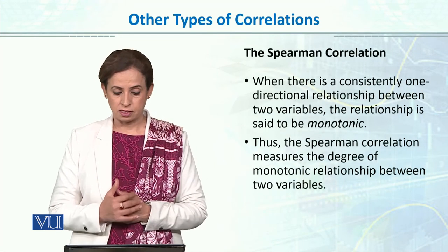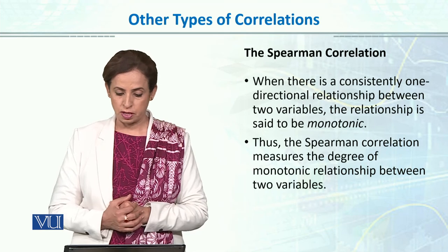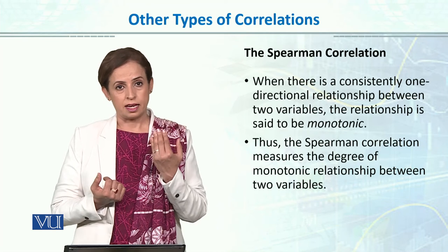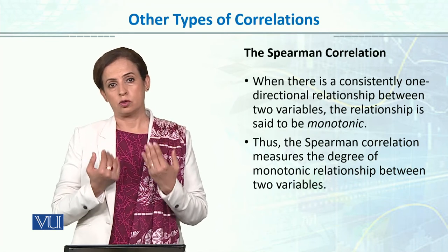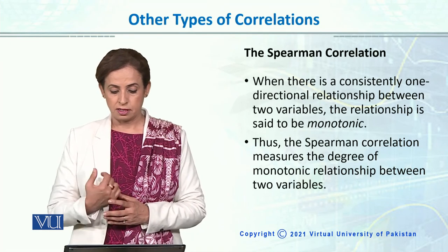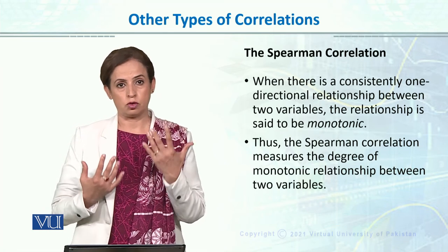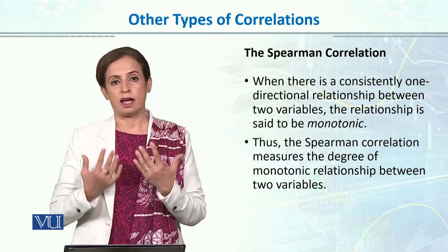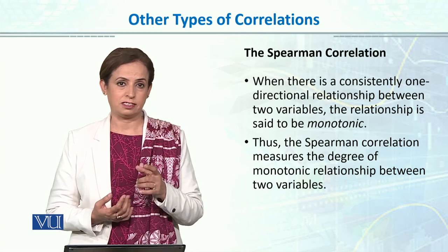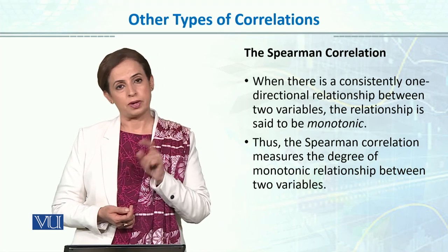When there is a consistent, one-directional relationship between two variables, the relationship is said to be monotonic. When both X and Y are consistent — meaning when one has a high rank the other also has a high rank — we call it a monotonic relationship. Thus, the Spearman correlation measures the degree of monotonic relationship between two variables, using the ranks of both on an ordinal scale. You can easily calculate it in SPSS by switching the option from Pearson to Spearman.